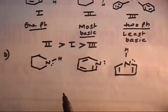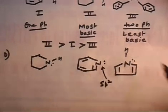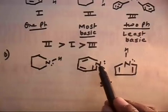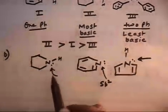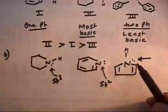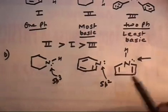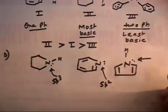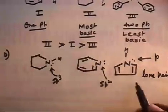In the first compound, the lone pair is in the sp2 orbital. Nitrogen is sp2, so the lone pair is in sp2. In the second compound, the lone pair is in sp3. In the third compound, this lone pair is in the ring resonance — the compound will be aromatic only if 6 pi electrons are satisfied (4n+2, n=1), and this is possible only if the lone pair participates in resonance. So the lone pair of compound three is in resonance.